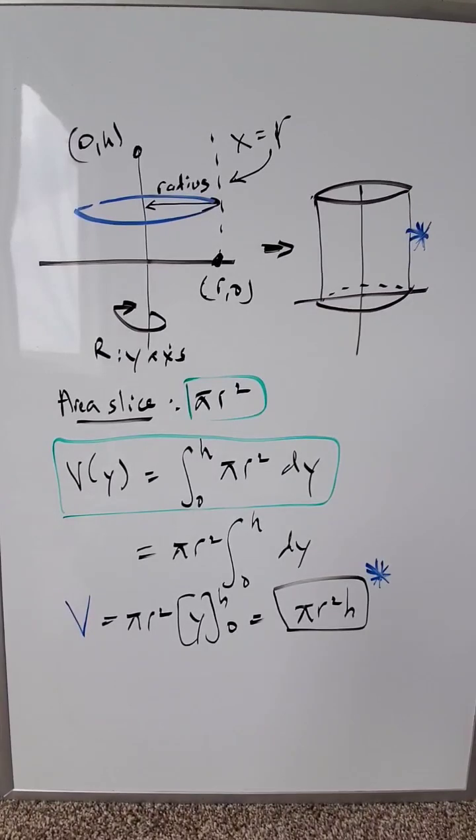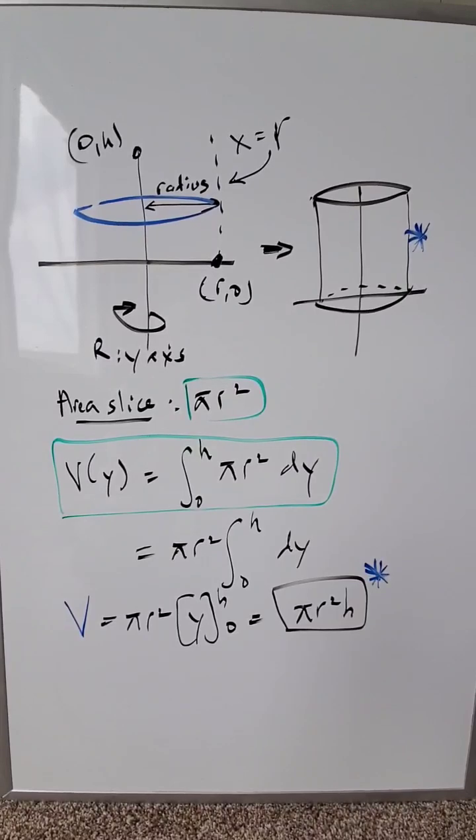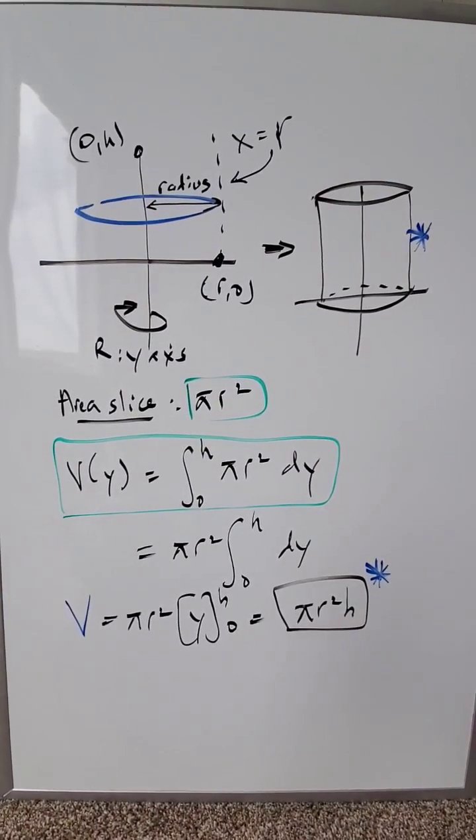In the graph at the top, we have a vertical line x equals r. I have two important coordinate points, (r, 0) and (0, h), which delimit the radius and the height of this cylinder.